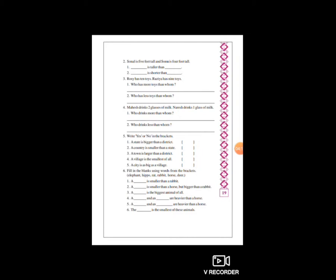તો તે છે hippo અને elephant. પણ આપણે મૂકીએ કઈ રીતે - hippo ની આગળ 'a' લાગે. A hippo and an elephant - a, e, i, o, u - 'an' ત્યારે use કરીએ જ્યારે ઉચ્ચાર vowel હોય. તો A hippo and an elephant are heavier than horse.